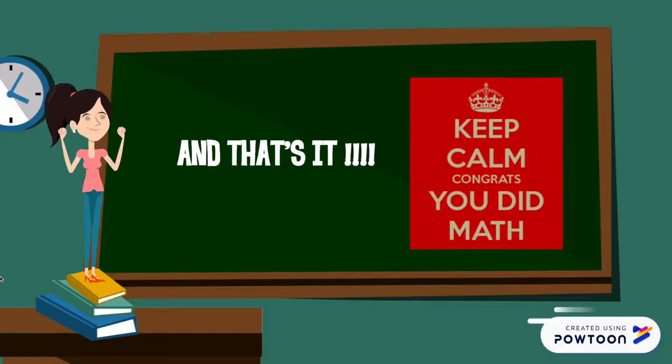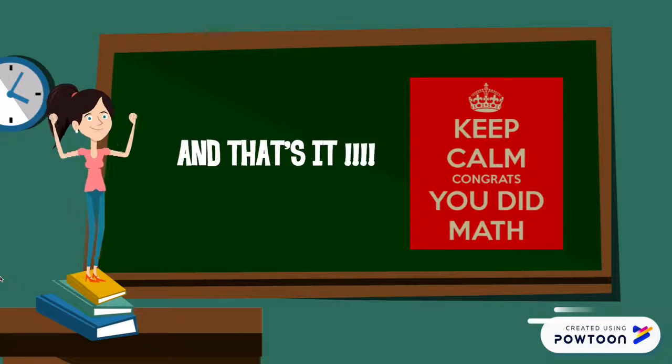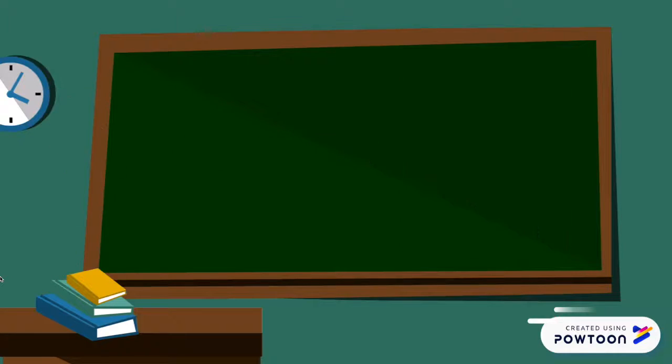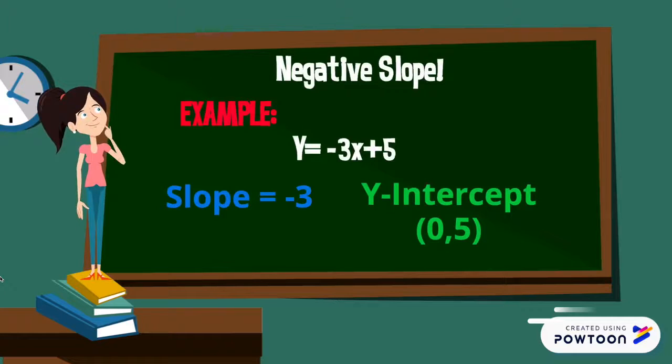Now we're going to move on to another example, and this example is going to be with a negative number instead of a positive number. The example is y equals negative 3x plus 5, where our slope is negative 3 and our y-intercept is 5. So we have our x value is 0 and our y value is 5.